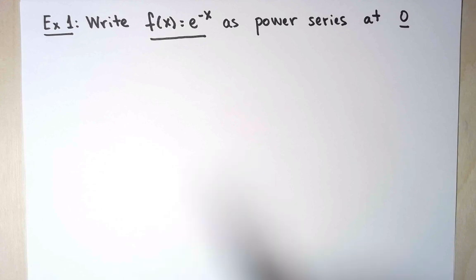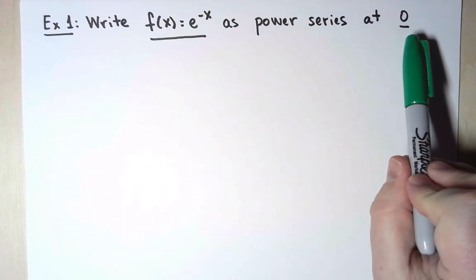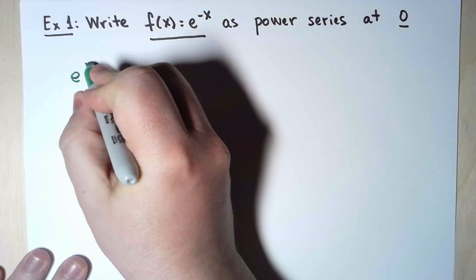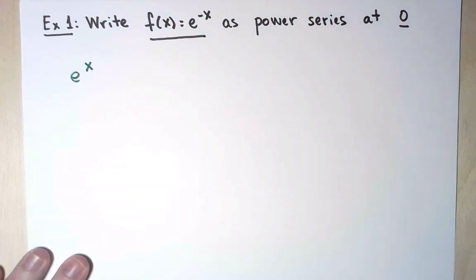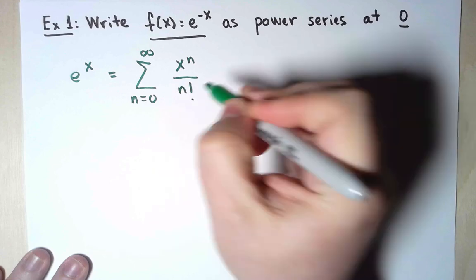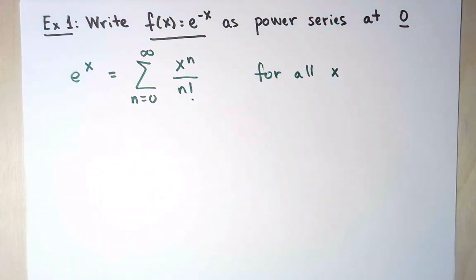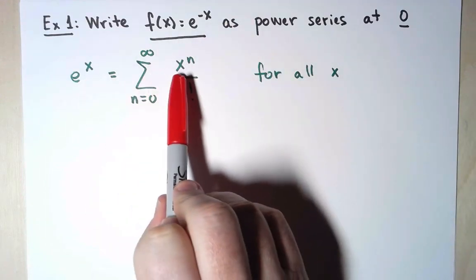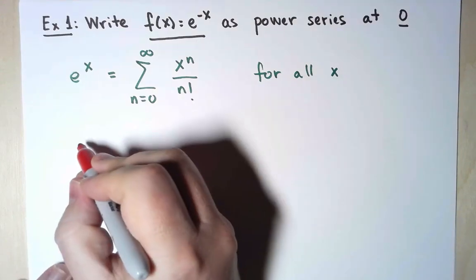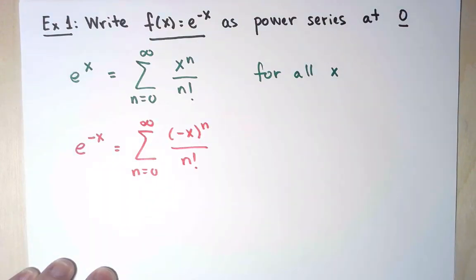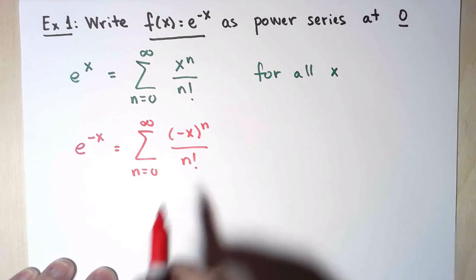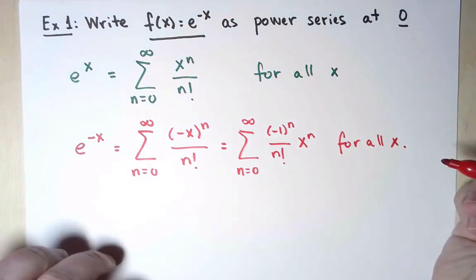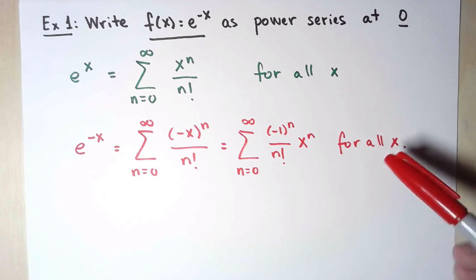For my first example, I want to write the function e to the minus x as a power series centered at zero. This is very close to the function e to the x, and I already know how to write that one as a power series, so I'll begin with that. This is true for all x. Then, if instead of e to the x, I want e to the minus x, all I have to do is replace x with minus x everywhere, and I can use the same formula.